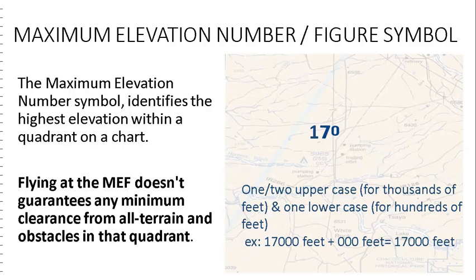We have information on high terrain and obstacles on sectional and terminal area charts. Maximum Elevation Figure number symbols are represented by two numerals: first, an uppercase letter of one or two characters which represents thousands of feet, and one lowercase for hundreds of feet. These are printed with a grid defined by latitude and longitude lines.